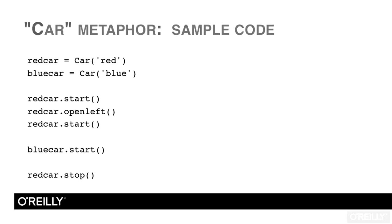We have red car and blue car. We could have called these X and Y. It doesn't really matter what we called the variables. What matters is that what came out of the car constructor is a car object. So now, whether it's red car or blue car, we can call start, stop, open left, etc. on each of these instances.